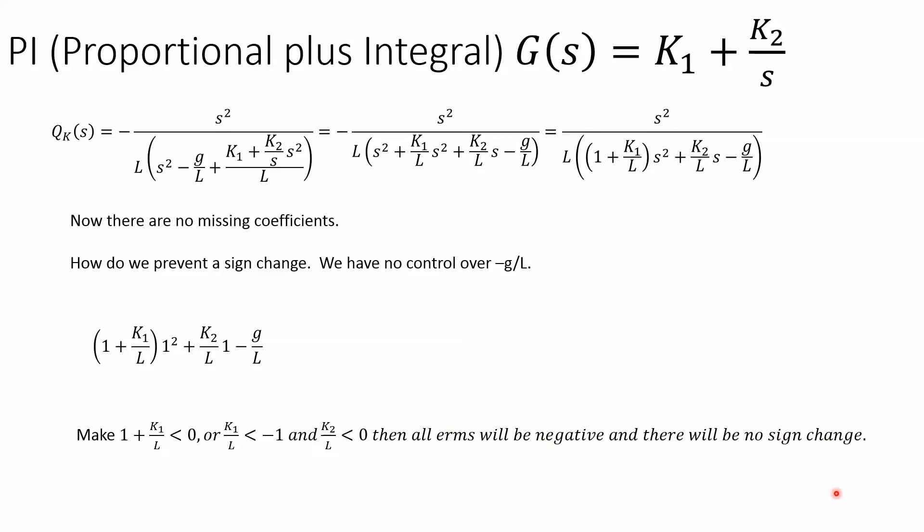Because you have K₁ and K₂, not only can you make it stable, but you can make it over, under, or critically damped however you like.